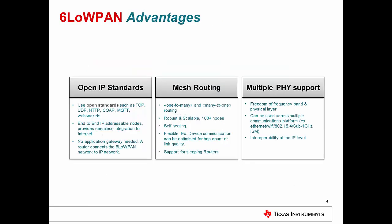Moving forward to the advantages it offers: the 6LoWPAN solution is completely based on open IP standards, making it very reliable. It uses open standards such as TCP, UDP, HTTP, CoAP, and WebSockets. End-to-end IP addressable nodes provide seamless integration to the internet — from the cloud, you can access and control every individual node anywhere in the world. Mesh routing enables very long-range communication, especially in applications where you cannot afford to lose a connection or a link. Self-healing is what mesh routing actually provides.